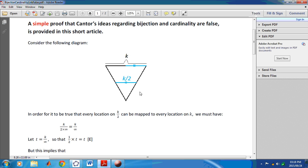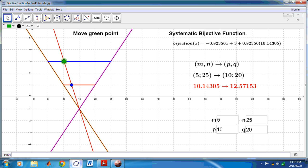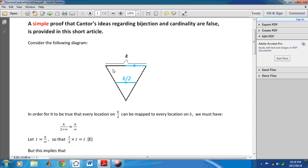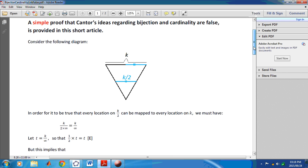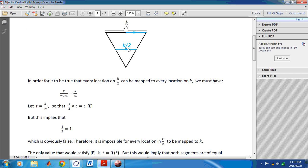Consider the following diagram. This diagram now is very similar to what you just saw here. This little triangle here could be interpreted as this triangle here. So let the length of this line here be k, and half of k be the blue line. In order for it to be true that every location on k2, on this line here, can be mapped to every location on k, we must have k divided by 2 times infinity equal to k divided by infinity, right?